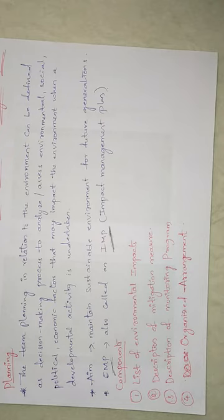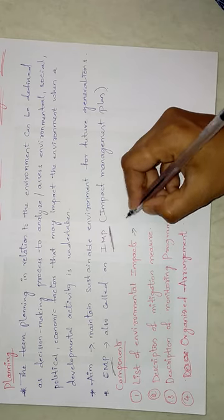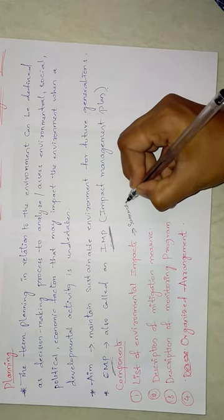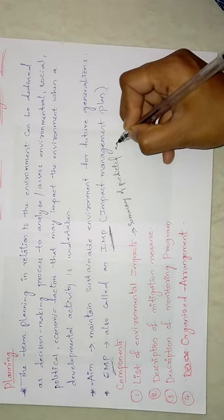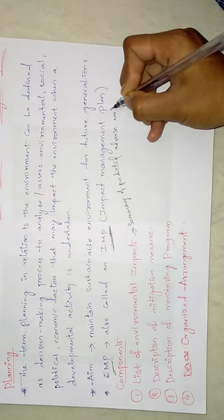The first component of EMP is the list of environmental impacts. This is a summary of the predicted adverse environmental and social impacts of the proposed project, for which monitoring should be specified. Whenever a project is taken up, there should be a summary of all the impacts that will be caused by that particular project.